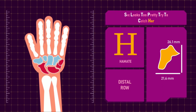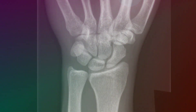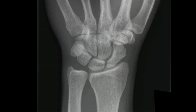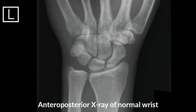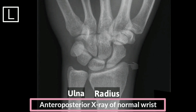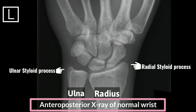Now let us look at radiography of the hand and wrist. These are the radius and ulna. The projection of the distal radius on the lateral surface is its styloid process, and this is the ulnar styloid process. This lateral and round articular eminence is the head of ulna.